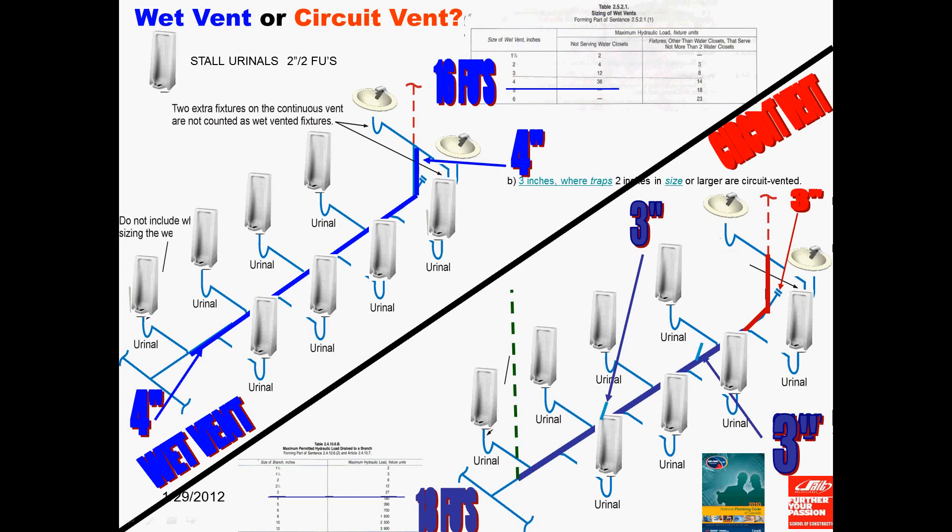There's only 2 fixture units dumping in this wet portion of the circuit vent, which are the 2 lavs. Remember, there's no toilets on this circuit vent branch. Therefore, you have to look at the wet vent table, 2521 or 2581, and look under not serving water closets, and you will find that its minimum size will be inch and a half in size.